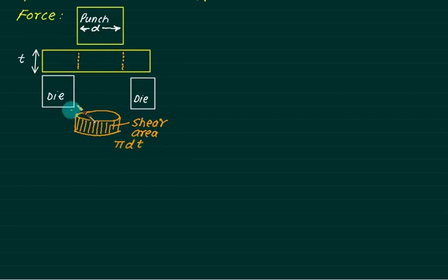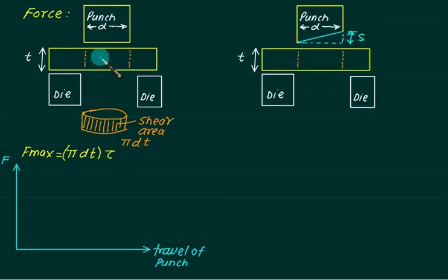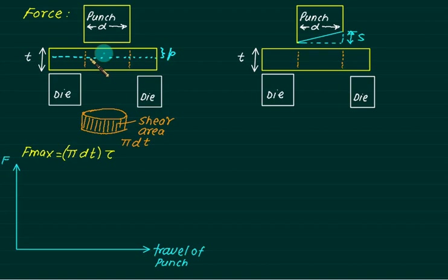When no shear is provided, maximum force is required: F_max = π·d·t·τ. When the punch moves downward, it partially penetrates to a length called percentage of penetration p. The distance traveled is p multiplied by t, where p is the percentage of penetration.